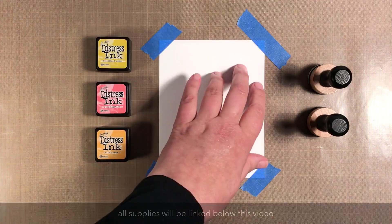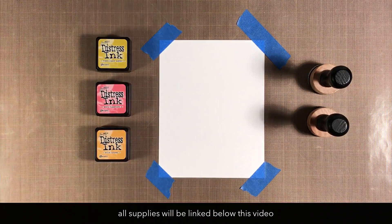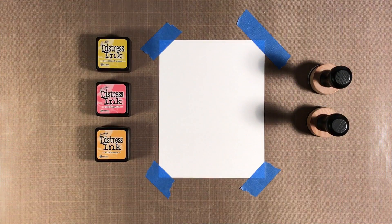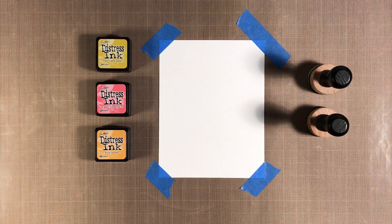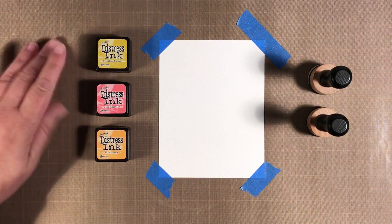So I'm starting today with some smooth Neenah Solar White cardstock. And I am going to be using distress inks today. I've got three colors: fossilized amber, worn lipstick, and wild honey.